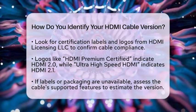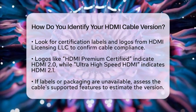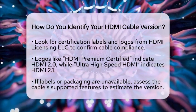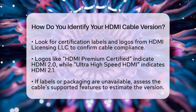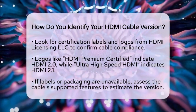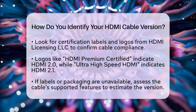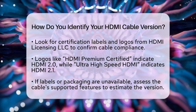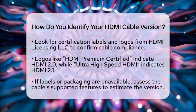You can usually find these logos on the packaging or sometimes on the cable itself. If you cannot find any labels or packaging, you can sometimes figure out the cable version by its supported features. For example, if your cable supports 4K at 60 Hz, it is likely HDMI 2.0 or higher. If it supports 8K at 60 Hz or 4K at 120 Hz, it is likely HDMI 2.1. However, this method may not be completely accurate, as some cables might not perform as advertised.